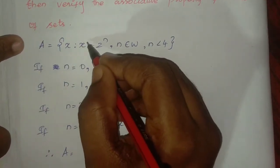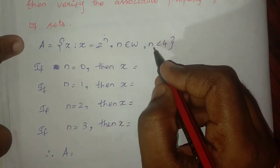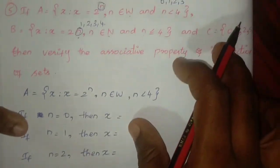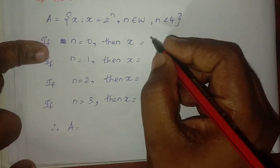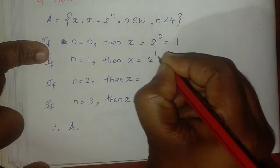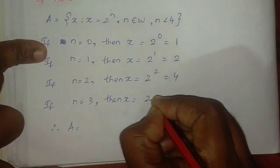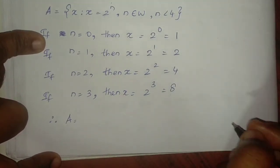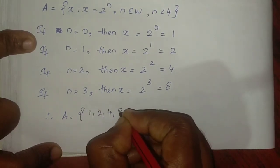For set A: x equals 2 power n, n belongs to whole numbers, n less than 4, so n takes values 0, 1, 2, 3. Substituting: 2 power 0 equals 1; 2 power 1 equals 2; 2 power 2 equals 4; 2 power 3 equals 8. So A equals {1, 2, 4, 8}.